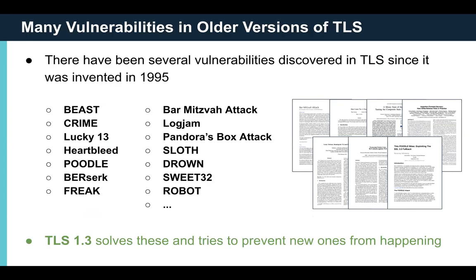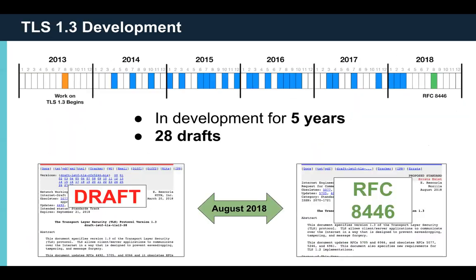Looking back at the TLS protocol, there have been a lot of vulnerabilities discovered at the protocol level — researchers tend to give them catchy acronym names. The TLS 1.3 protocol designers wanted to help solve this problem and make it harder for vulnerabilities to be discovered in the future. TLS 1.3 was in development for over five years: it started in August 2013, was finalized in August 2018, went through 28 drafts, and was finally given RFC number 8446.